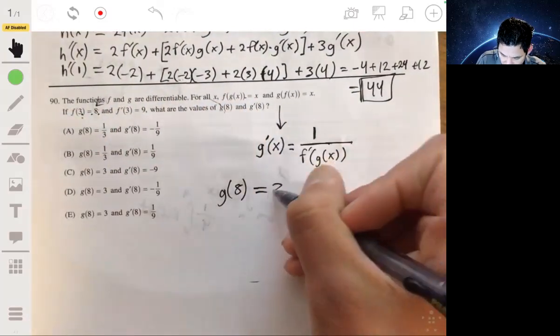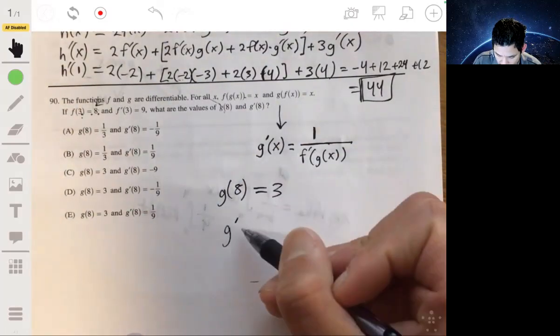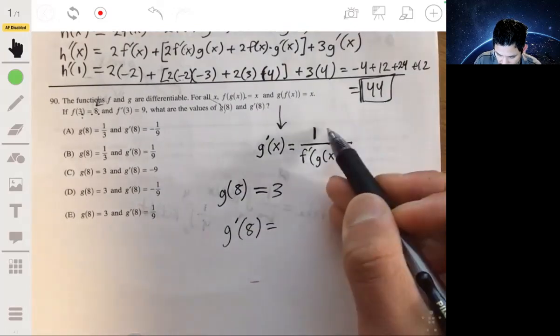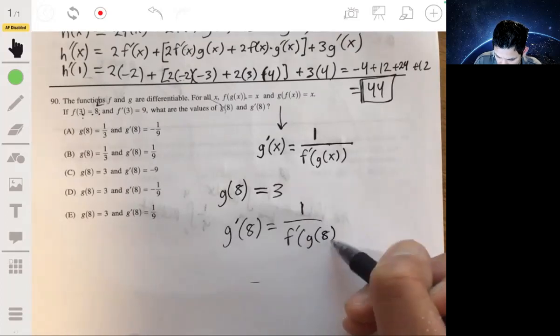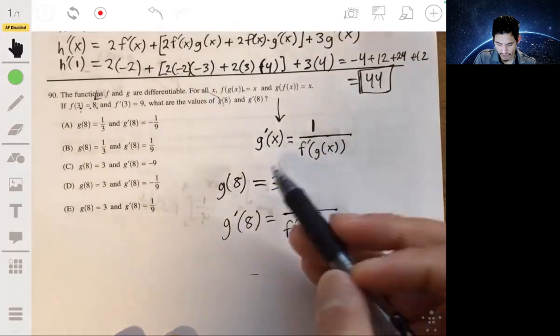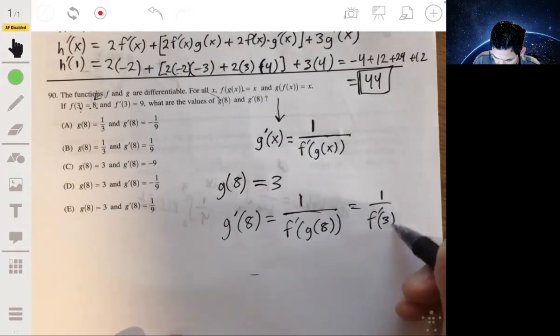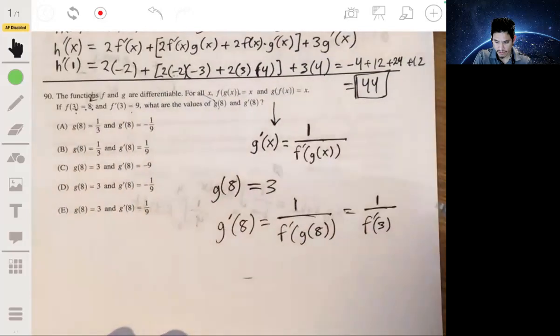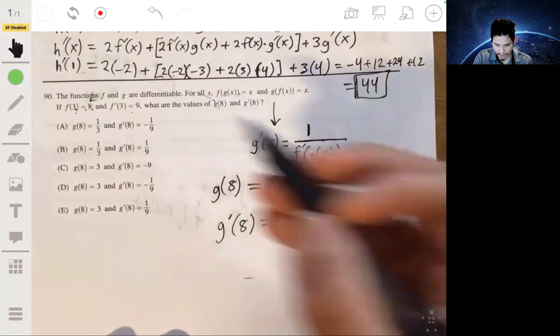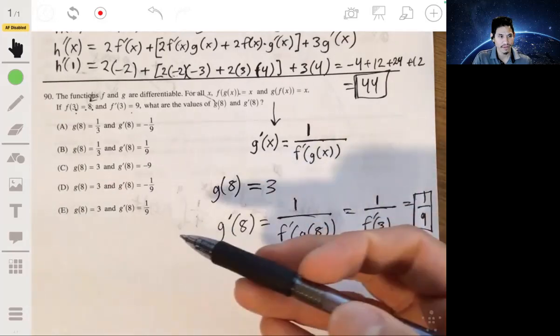So g of 8, from that, we can tell you it's 3. Alright? We want to find g prime of 8. So g prime of 8, using this, is 1 over f prime of g of 8. We found g of 8 is 3, so this is 1 over f prime of 3. So we just find what f prime of 3 is. And f prime of 3 is, no, f prime of 3 is 9, is what I meant to say. So this is just 1 over 9. And that's all there is to it.